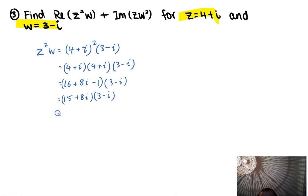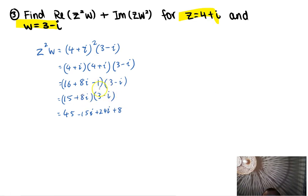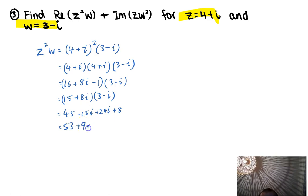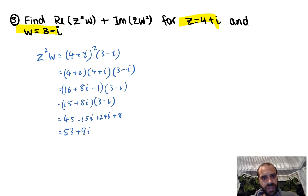Now multiplying 15 plus 8i by 3 minus i: 15 times 3 is 45. 15 times negative i is negative 15i. 8i times 3 is 24i. And 8i times negative i gives positive 8, because i squared gives negative 1, and negative 8 times negative 1 is positive 8. So 45 plus 8 is 53, and negative 15i plus 24i is 9i. So z squared w equals 53 plus 9i. I'll leave that aside for a minute.